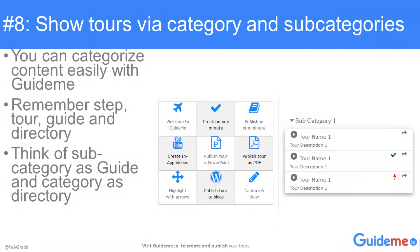You can categorize content easily with GuideMe. Remember: step, tour, guide, and directory. Think of subcategory as guide and category as a directory. You can publish a directory on your URL.